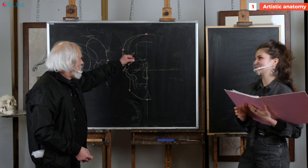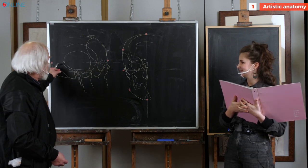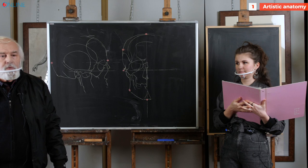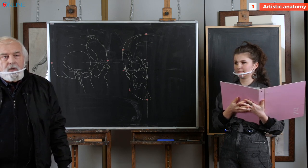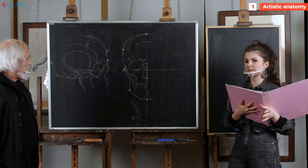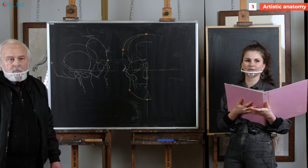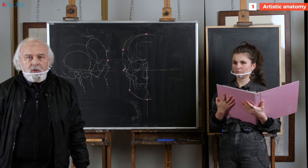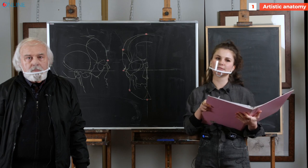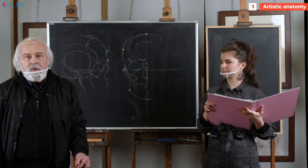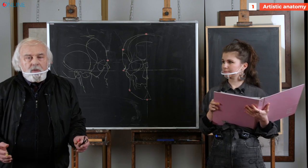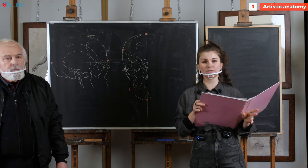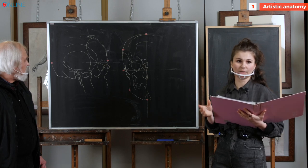Let's name them once again: the height, the length, and three sizes for the widths. When you're working with the size and proportions of the skull, you measure and compare these five linear sizes. You already know that when we draw the head, we start not from the details but from the big form. Already on the initial stages, you start to work with these big sizes and big forms of the head, comparing the proportions.